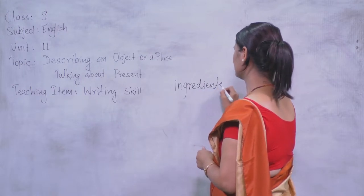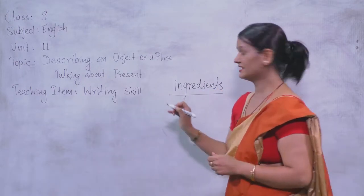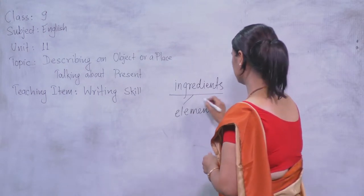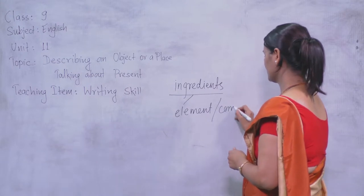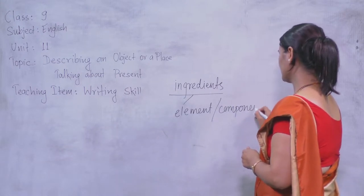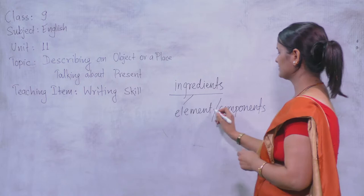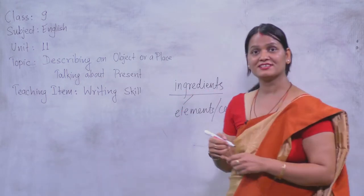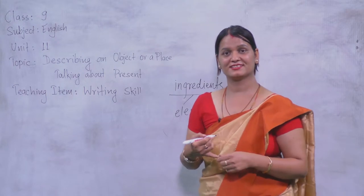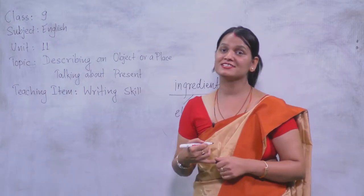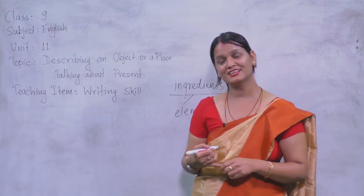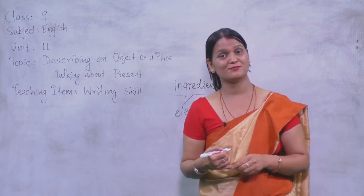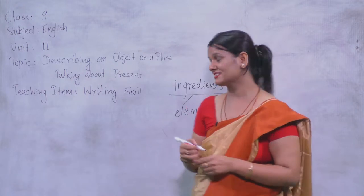Do you know what ingredients are? Ingredients are the elements or components which are used for making momo. So can you guess what are the things needed? There are varieties of momo we can find in the market — vege momo, non-vege momo, and there are other varieties as well.